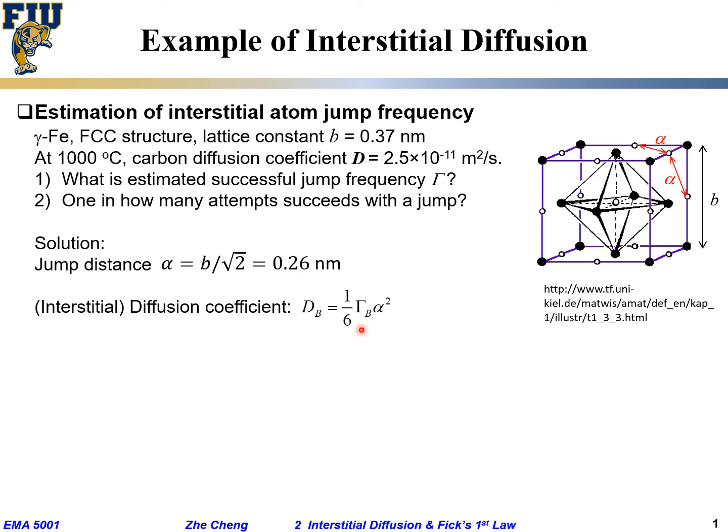Γ is my successful jumping frequency. α is your jumping distance. In this equation, what do we already know? D is given. α is what we just calculated. Can you calculate Γ? Yes, this one simple equation, you can calculate Γ.